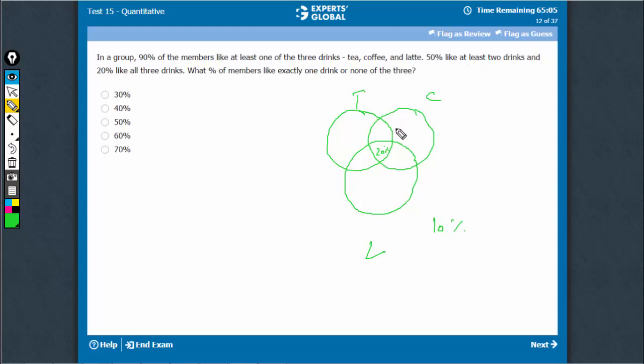50 like at least two. So 50 is 2 as well as 3. So if 20 is 3, this part has to be 20.